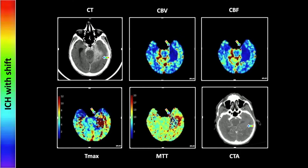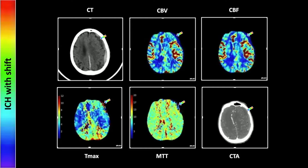Next, let's look at this relatively large subdural hemorrhage. You can see on the CBV and the CBF there is markedly reduced volume and flow in the region — obviously because of the presence of the hematoma — and the Tmax and the MTT certainly do look abnormal in that region, although they're a little more heterogeneous and a little less easily interpreted. Slightly higher up, there's actually a left frontal extra-axial collection of hemorrhage creating a similar phenomenon, with reductions of the CBV and CBF and questionable alterations in the Tmax and MTT.